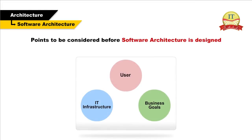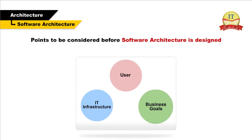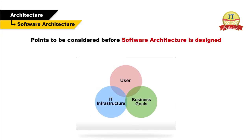The points to be considered before software architecture is designed: software should be designed with consideration for the user, the IT infrastructure and the business goals. For each of these areas, an architect should outline key scenarios and identify important quality attributes, key areas of satisfaction and dissatisfaction.